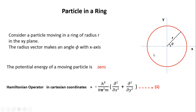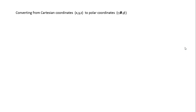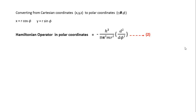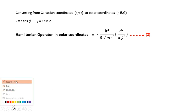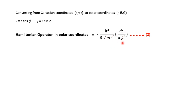Since we are considering a ring and the particle has radius r and makes an angle φ with the x-axis, polar coordinates are more compatible to use. We convert the Hamiltonian operator from Cartesian to polar coordinates r, θ, φ. Since we don't have the z-axis, there is no angle θ. With x = r cos φ and y = r sin φ, the Hamiltonian operator in polar coordinates becomes −h²/8π²mr² × d²/dφ².